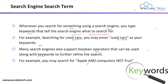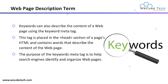For example, you may search for 'apple AND computers NOT fruit.' This means when you enter 'apple and computers,' the search engine will not show you results for apple as a fruit — in that case, the search engine understands that this 'apple' refers to the company.